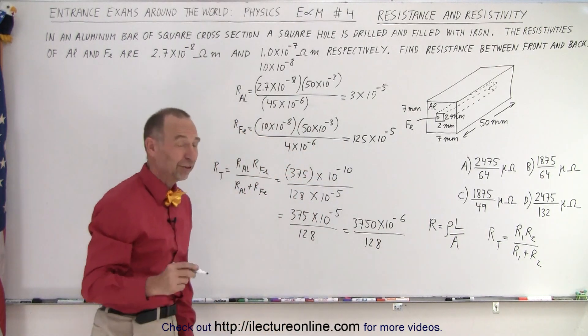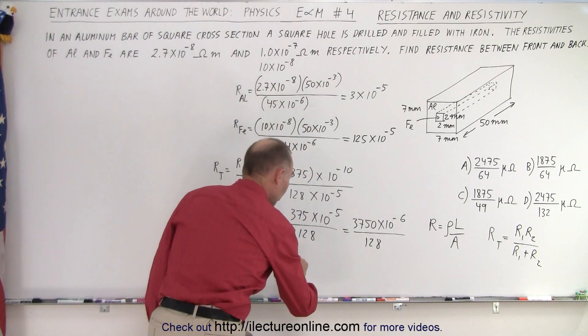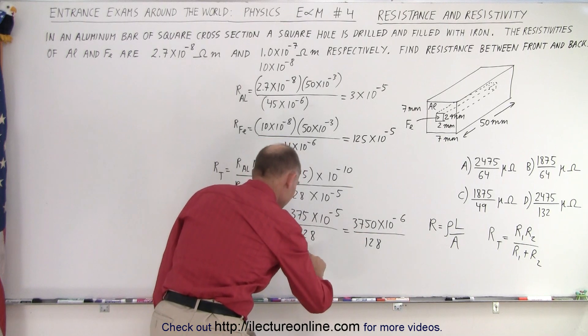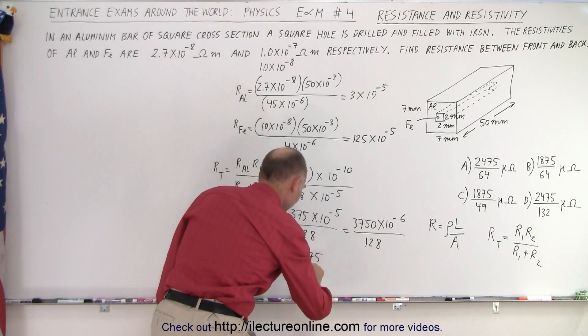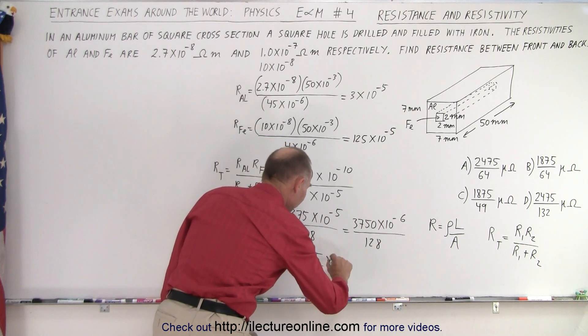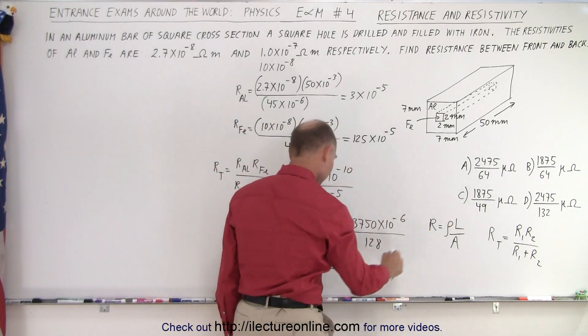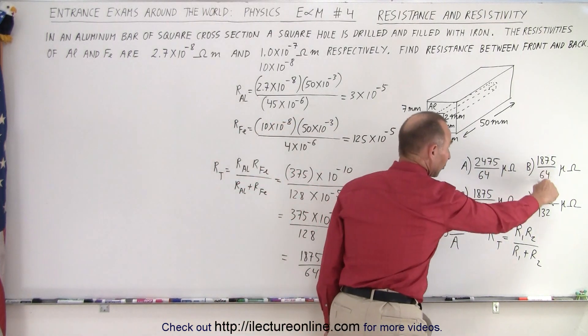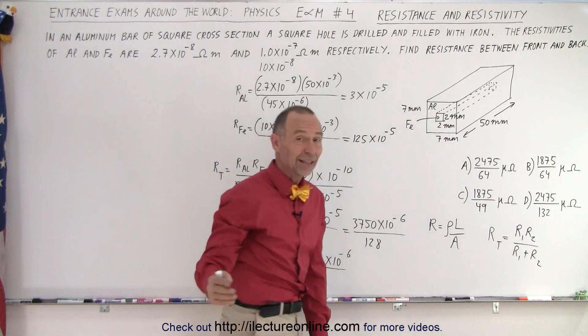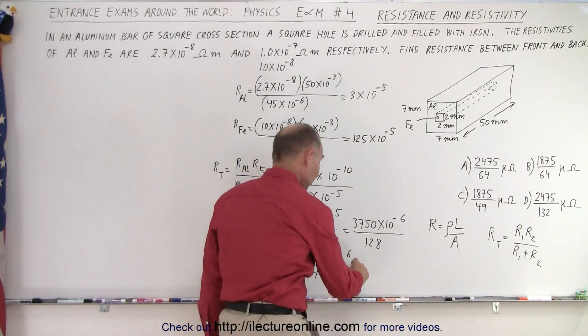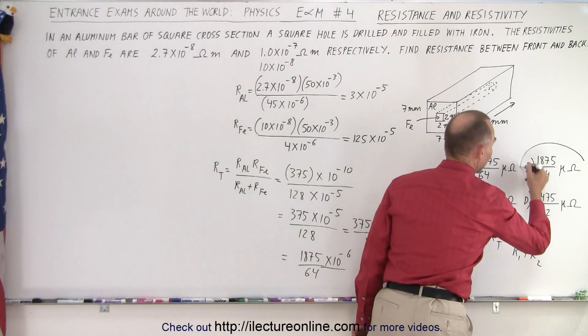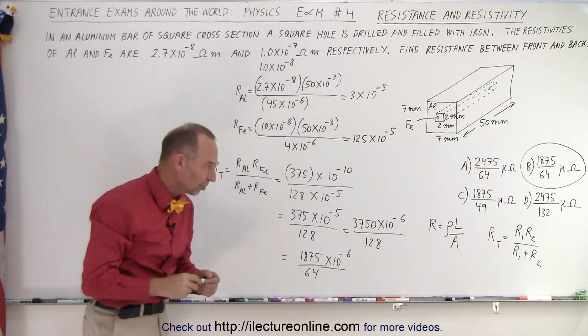Notice they both are divisible by 2, so this would be 1875 divided by 64 times 10 to the minus 6. And notice I have 1875 and a 64, that's this one, and micro is 10 to the minus 6. So this matches up with this and therefore this is the correct answer.